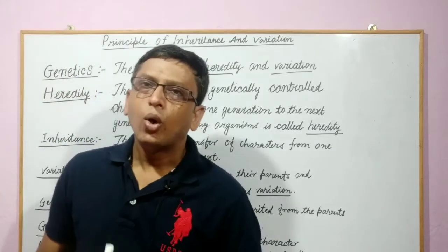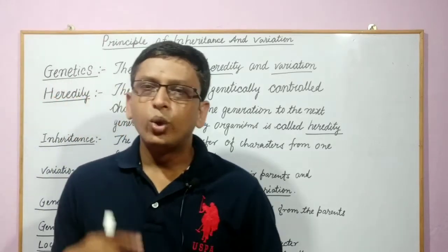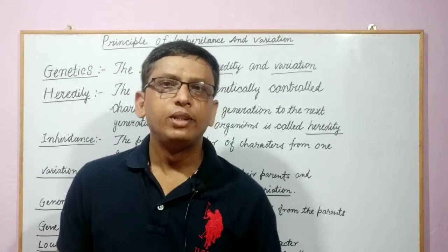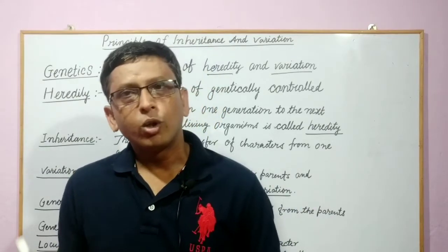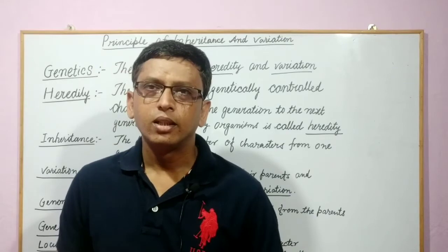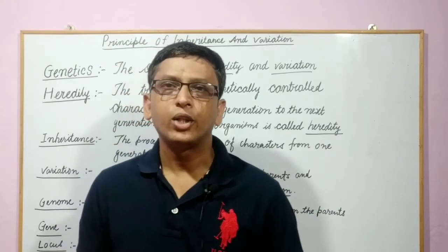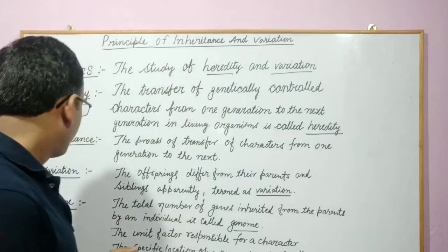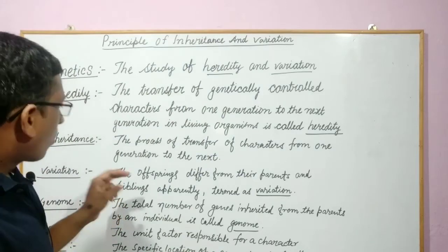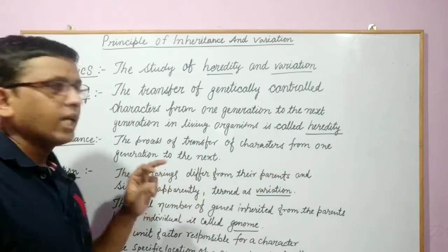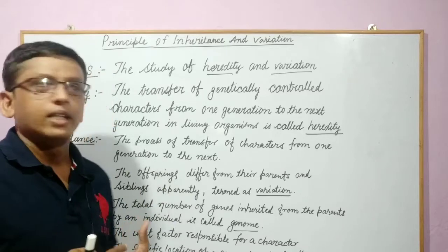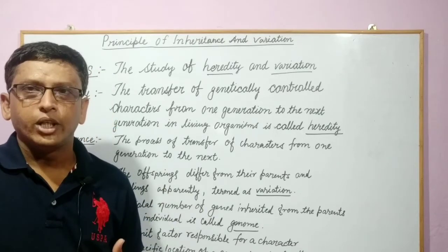Now, you will see the offspring also differ to some extent with their parents and also among the siblings, and that is known as variation. So what is variation actually? Variation is the offspring differ from their parents and siblings apparently, and that is termed as variation.